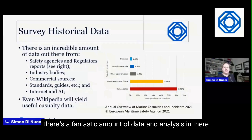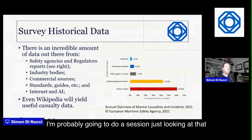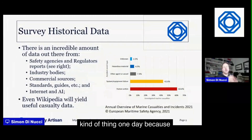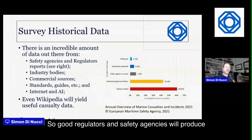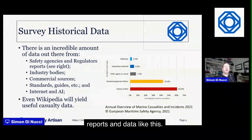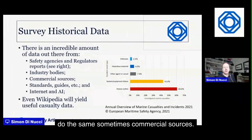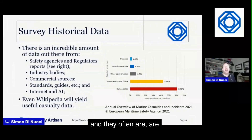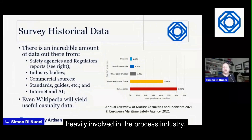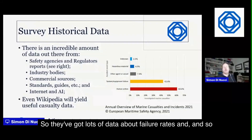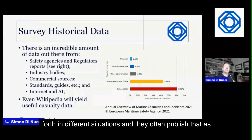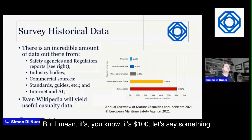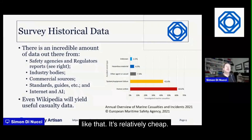Good regulators and safety agencies produce reports and data like this. Industry bodies may do the same, and there are sometimes commercial sources too — for example, providers of functional safety courses often publish data on failure rates in the process industry as a book, which might cost around a hundred dollars. There may also be relevant standards and guidance published online.